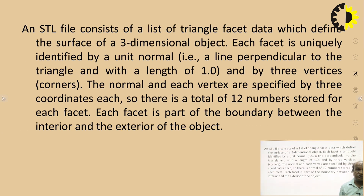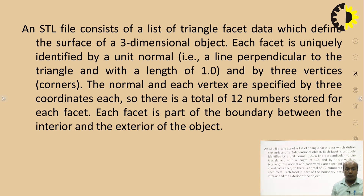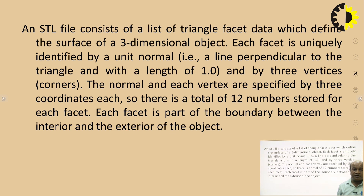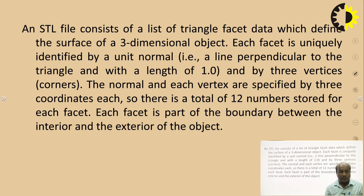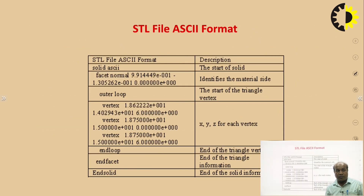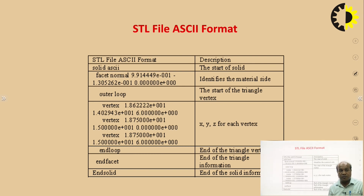An STL file consists of a list of triangle facet data which define the surface of a three-dimensional object. Each facet is uniquely identified by a unit normal — a line perpendicular to the triangle with a length of one — and by three vertices or corners. The normal and each vertex are specified by three coordinates each, so there is a total of twelve numbers stored for each facet. Each facet is a part of the boundary between the interior and exterior of the object. This is the format of the STL file in ASCII.